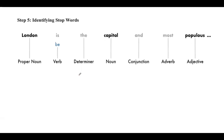First, we need to remove those stop words from the given text. Here, this is the output which is generated if we take the same sentence we took before, after identifying stop words. The stop words in the sentence are 'is', 'the', and 'most'.